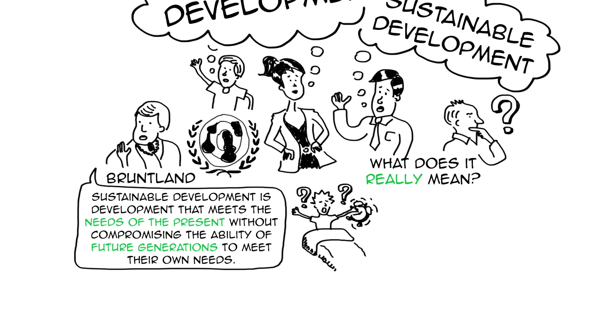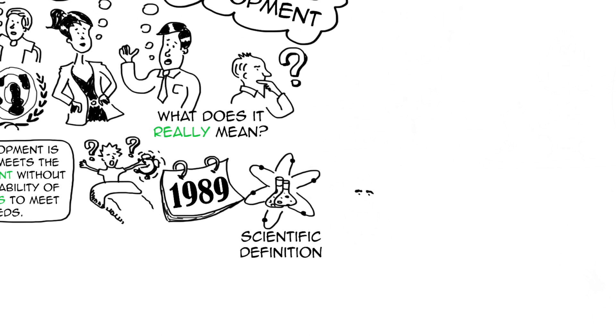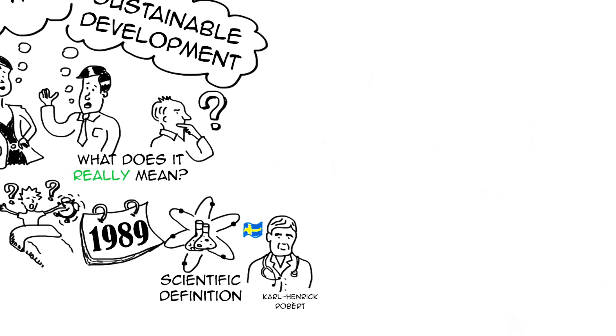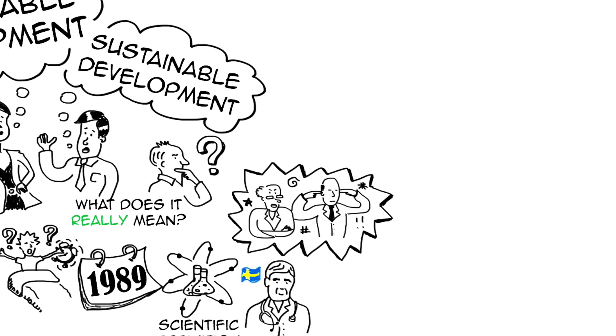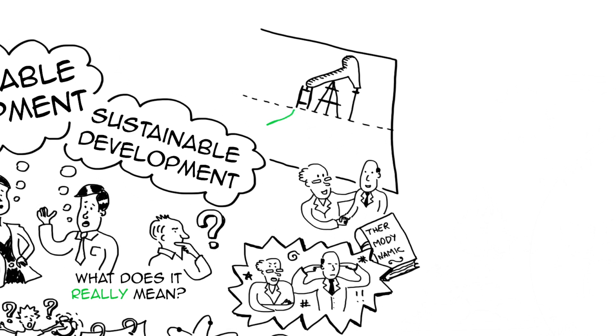There's another one, one that was created in the late 1980s, that is more of a scientific definition. It was created by a Swedish doctor, his name is Karl-Henrik Robert. And he was frustrated with the lack of common language around sustainability. So he thought, what if we managed to get a group of scientists together and to agree on what sustainability means based on science and thermodynamics?